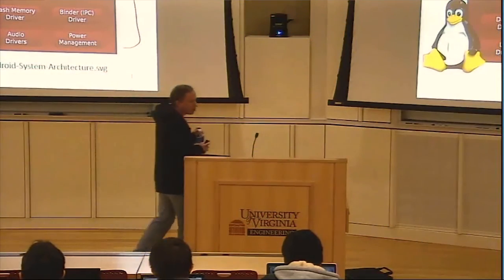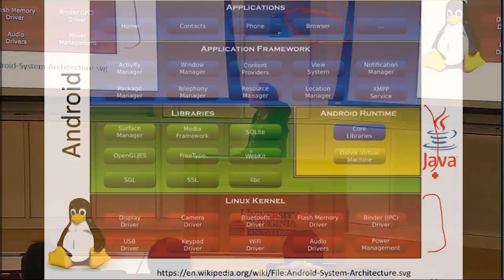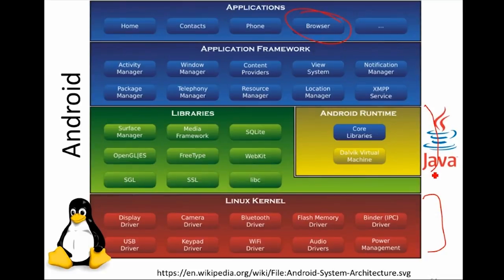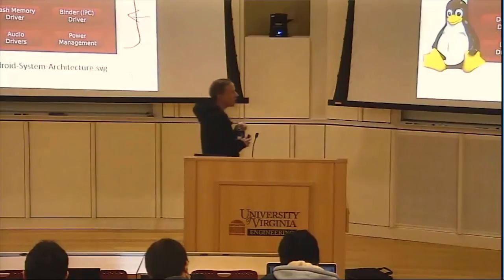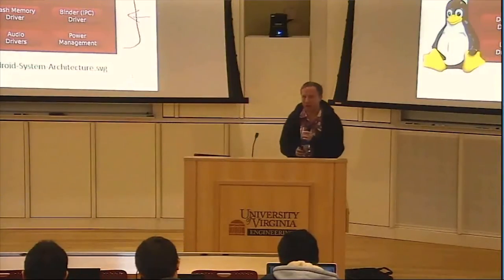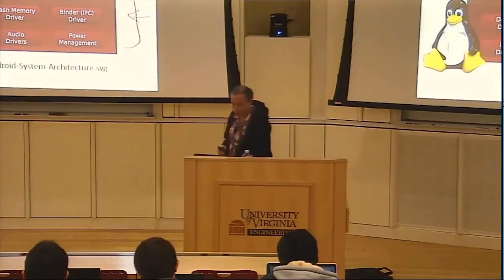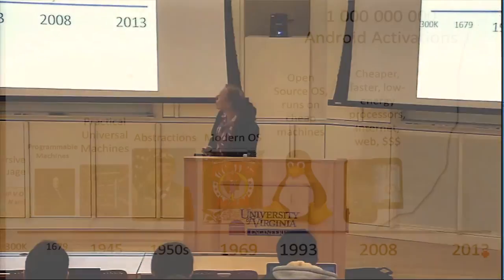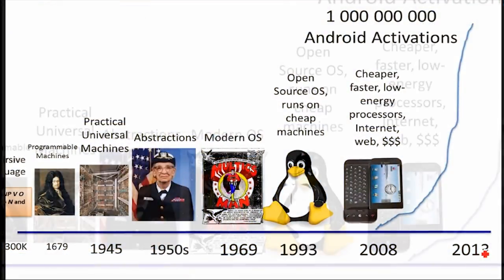In normal use when people talk about operating systems, it includes lots of things that are not part of the kernel — programs like the web browser, which are not really part of the operating system but come pre-installed on an Android device and don't run with any special privileges. An Android app running in the Android runtime doesn't have access to resources without going through the libraries in the Android runtime. But the only part that has access to the whole machine is what's in the kernel — that's what's running with supervisor privileges. All of this was based on Linux, and we got to a billion activations five years later.